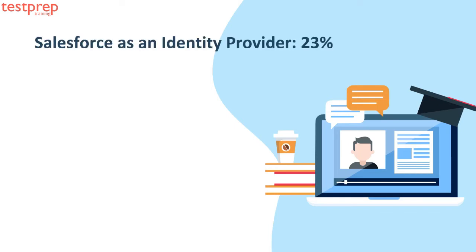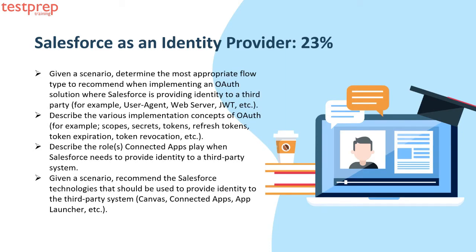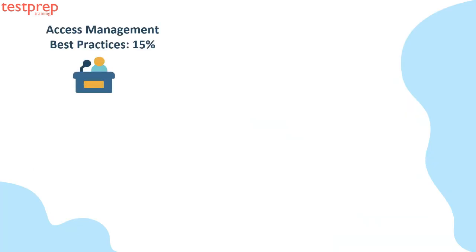Number three: Salesforce as an Identity Provider, 23%. It contains: first, given a scenario, determine the most appropriate OAuth flow type when implementing a solution where Salesforce is providing identity to a third party — for example, user agent, web server, JWT, etc. Second, describe the various implementation concepts of OAuth, such as scopes, secrets, tokens, refresh tokens, token expiration, and token revocation. Third, describe the roles connected apps play when Salesforce needs to provide identity to a third-party system. Fourth, given a scenario, recommend the Salesforce technologies to provide identity to the third-party system — Canvas, connected apps, App Launcher, etc.